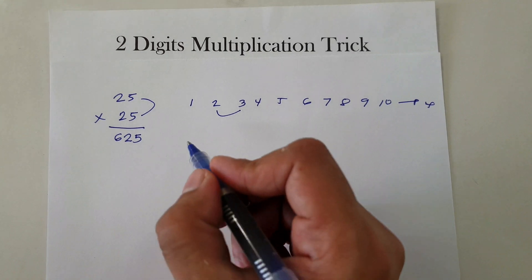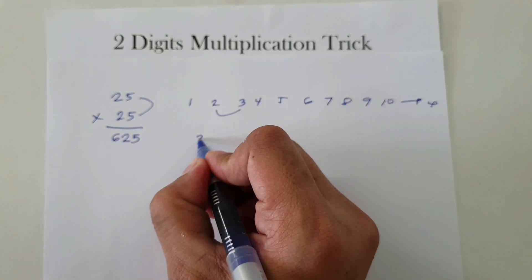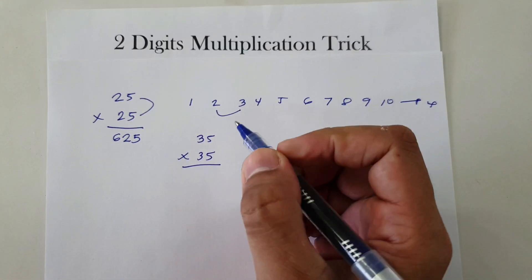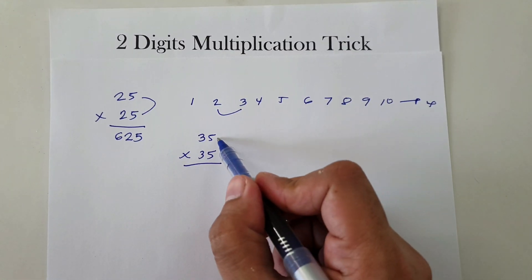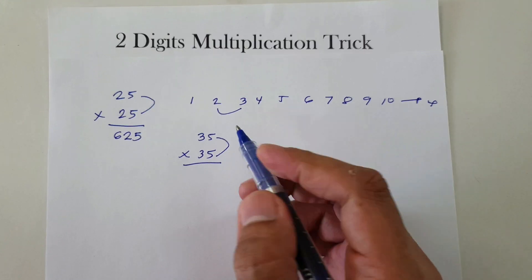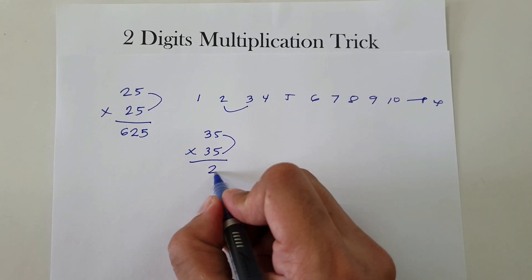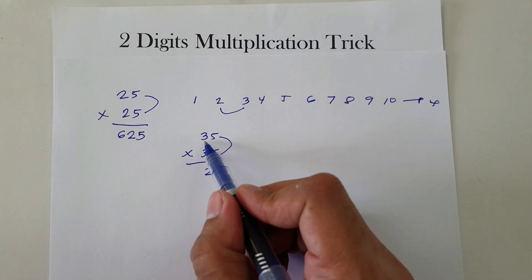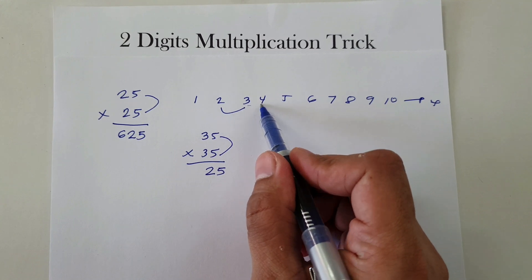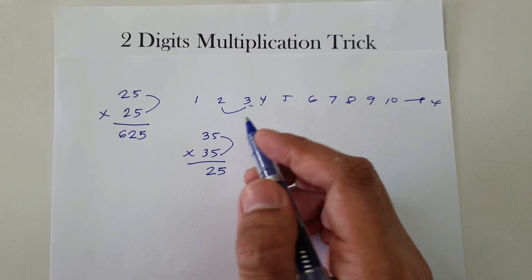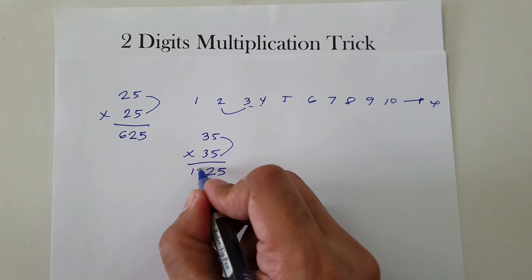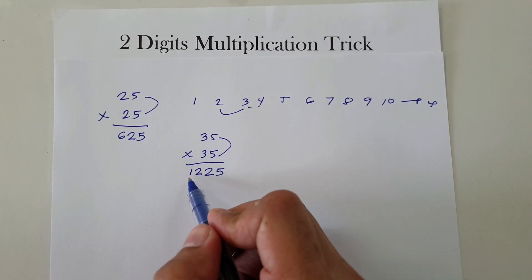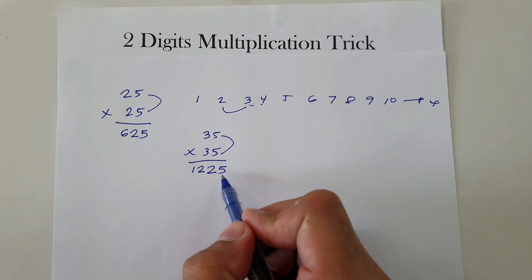Another example: let's say 35 times 35. First, 5 times 5 is always 25, so we write 25. The next number after 3 is 4. So 3 times 4 is 12. Therefore 35 times 35 is 1,225.